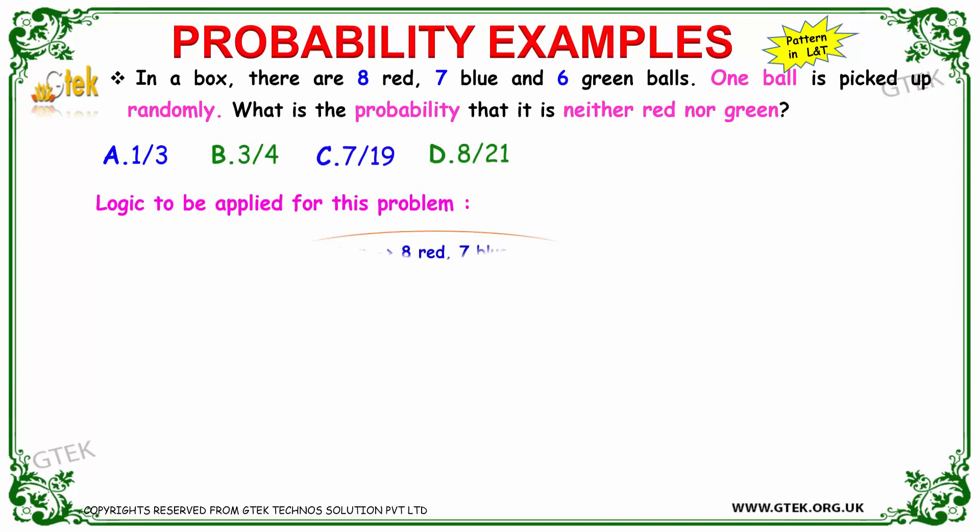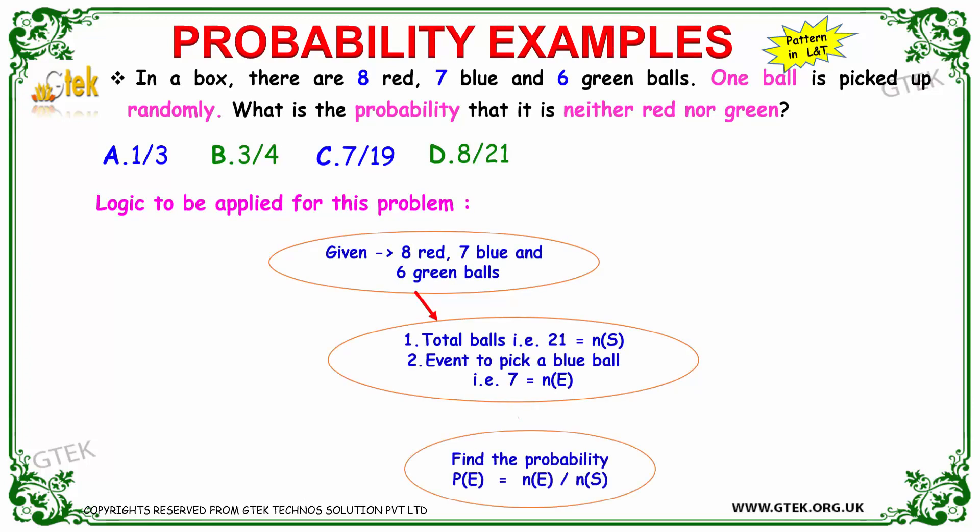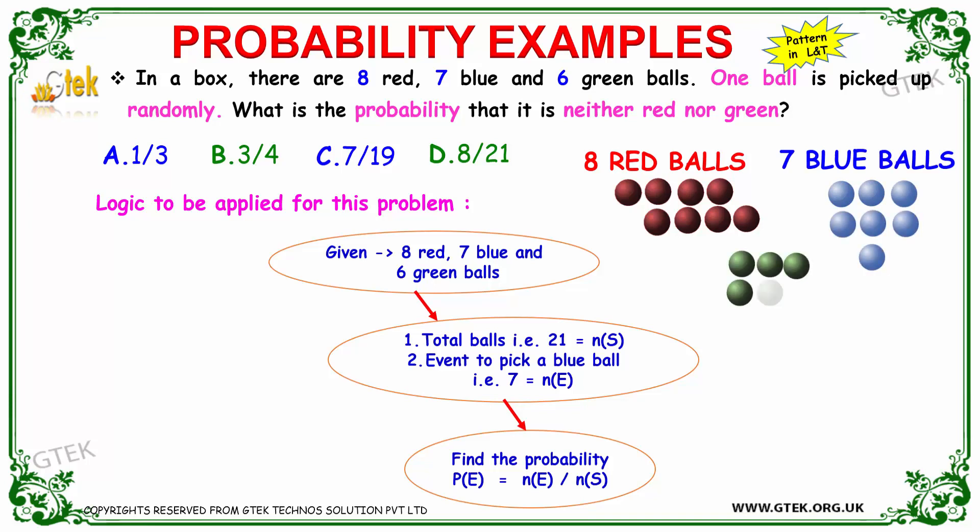Now let's see a typical example of putting balls in a box. We have eight red balls, seven blue balls, and six green balls placed in a box. One ball is picked up randomly.